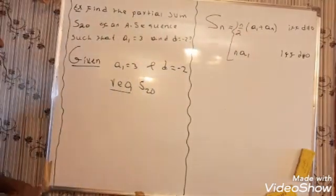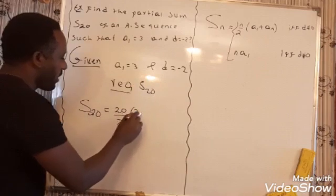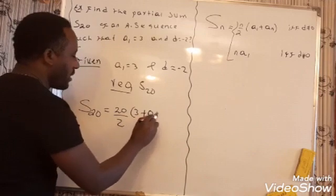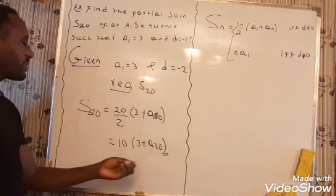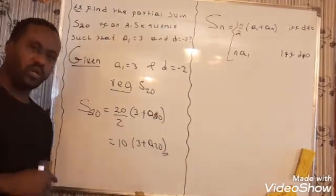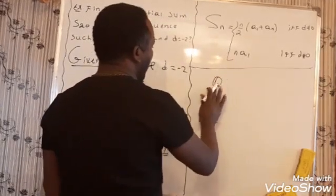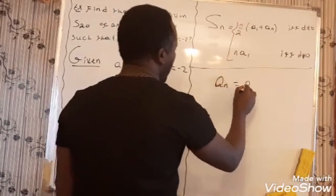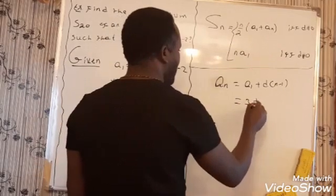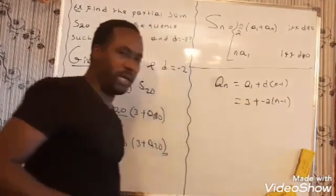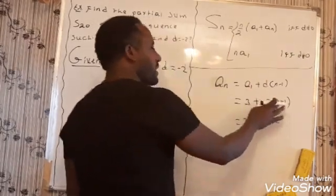That means S20 equals 20 over 2 times (A1 plus A20), where A1 is 3. We still need A20. Based on the arithmetic sequence general term formula, AN equals A1 plus D times (N minus 1). So A20 equals 3 plus (minus 2) times (20 minus 1), which gives 3 plus minus 2N plus 2.